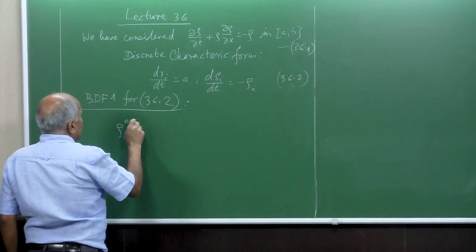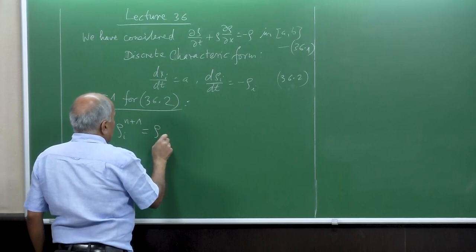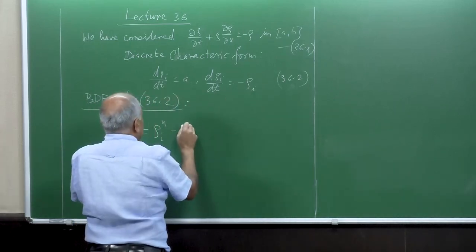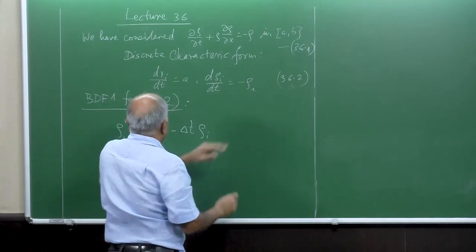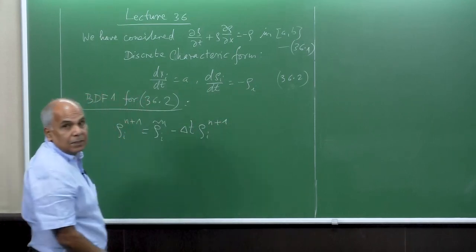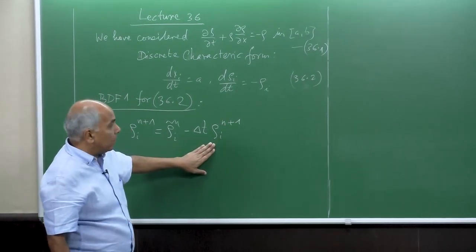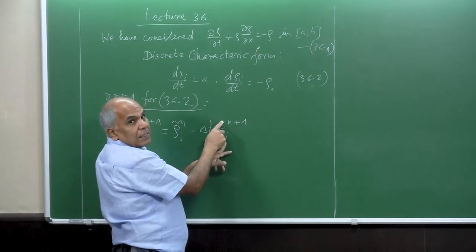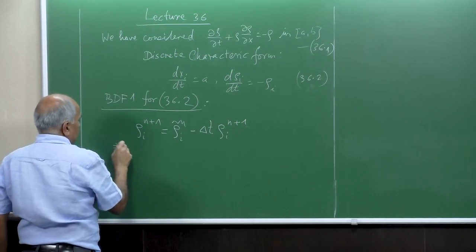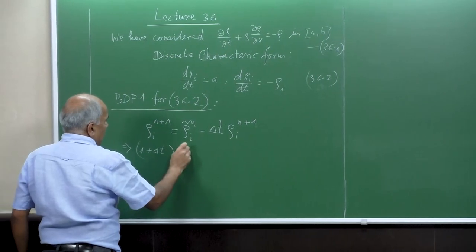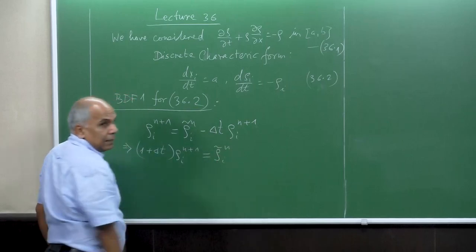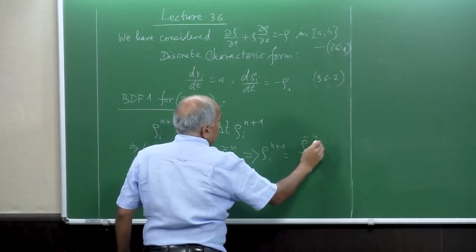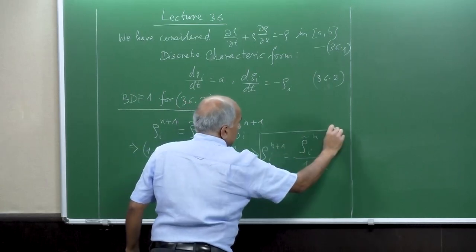So, rho_i^{n+1} is equal to rho_i^{n} plus delta t times the right-hand side. The right-hand side function value is minus rho_i, not at time level n but at n+1. Our initial value is rho_i tilde of n. We use rho_i^{n+1} implicitly, so there is no tilde here. Bringing it to the left-hand side: 1 plus delta t times rho_i^{n+1} equals rho_i tilde of n. This implies rho_i^{n+1} equals rho_i tilde of n divided by 1 plus delta t. This is our implicit form.